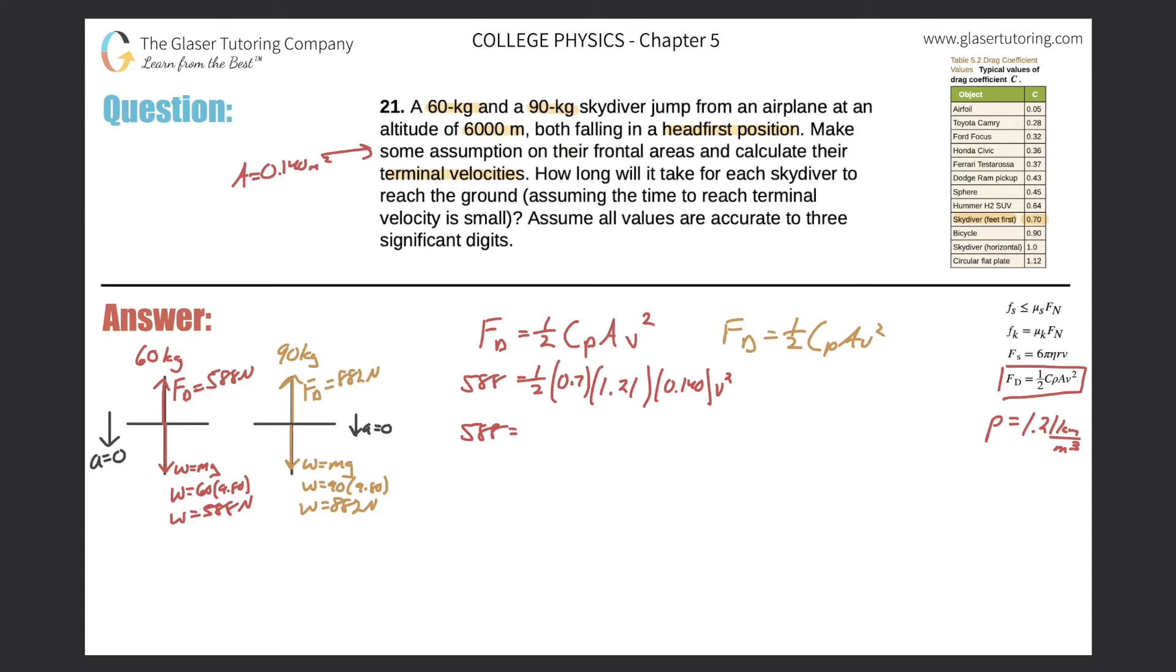So now let's recalculate that. So 0.5 times 0.7 times 1.21 times 0.14. We get a value of 0.0593 v squared. Divide this out. 588 over 0.0593. We get about 9,915, but we got around, so 9920. Take the square root of both sides. So now v will equal square root of 9920. And we get a value of about 100, basically, 100 meters per second. That's for the 60 kilogram person.